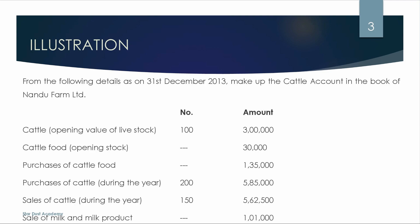We are going to prepare the account. The information we have provided includes the opening value of livestock — the opening stock is given. You have been given the number and amount. The total amount is $3,000,000. The total amount is $100,000. The cattle food opening stock is given.